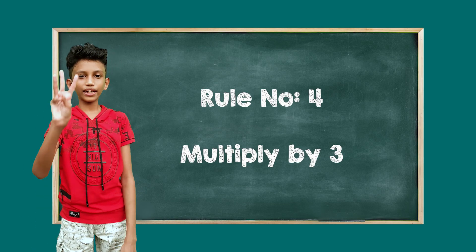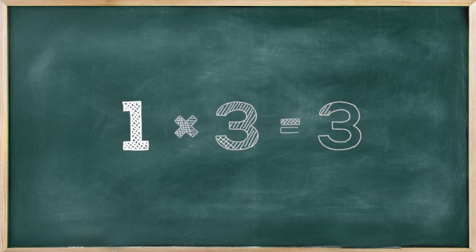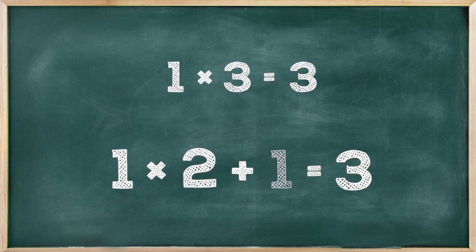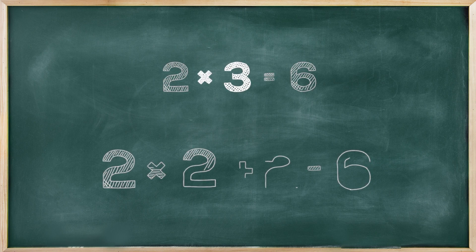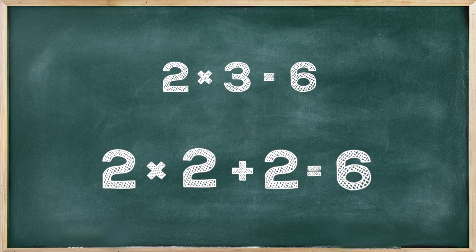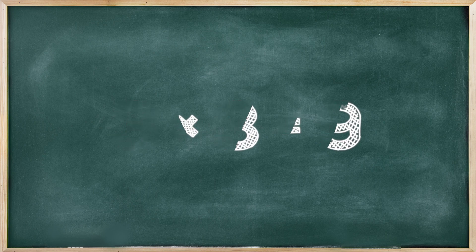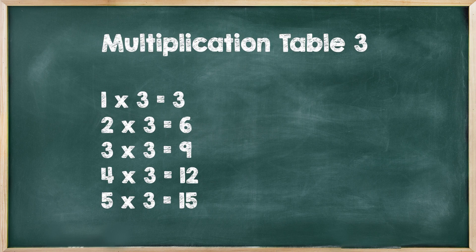Rule number 4: Multiplying by 3. When a number is multiplied by 3, add the multiplicand to the 2 times table result. 1 times 3 is 3 — that means add the multiplicand 1 to the 2 times table. 2 times 3 is 6 — that means add the multiplicand 2 to the 2 times table. 3 times 3 equals 9 — that means add the multiplicand 3 to the 2 times table. Like that, we can make the multiplication table of 3.